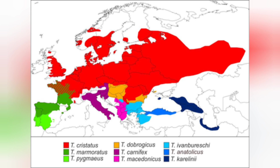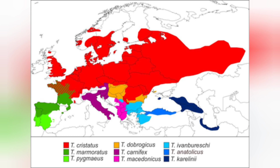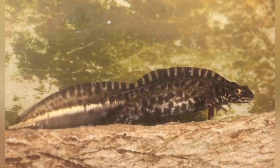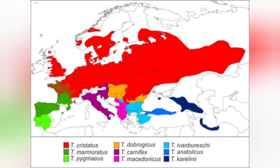Moving into the south of Portugal and the south of Spain, we have the southern marbled newt, also known as the pygmy marbled newt — Triturus pygmaeus. An interesting fact about Triturus pygmaeus is that it's actually one of only two Triturus species which is classed by the IUCN as near threatened.